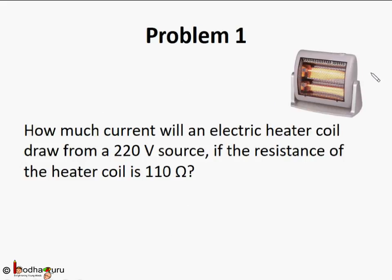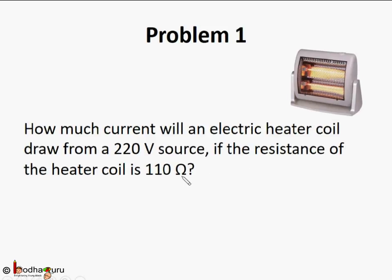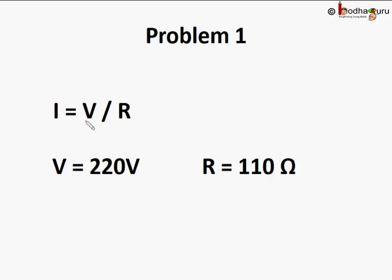How much current will an electric heater coil draw from a 220 volt source if the resistance is 110 ohms? We are given V = 220 volts, R = 110 ohms, and we need to find I. We know I = V/R, so I = 220/110 = 2 amperes. So 2 amperes of electric current is passing through the heater circuit.